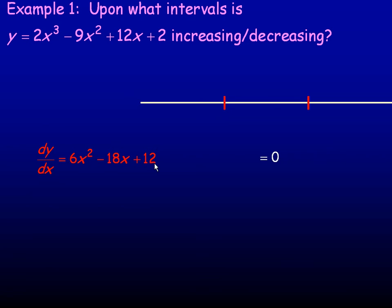So I would set that equal to zero. Notice in this equation, the entire equation is divisible by 6. So I can make it simpler by dividing everything by 6, and get x² - 3x + 2 = 0.